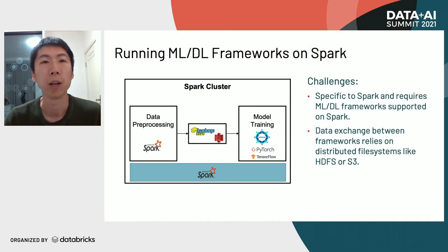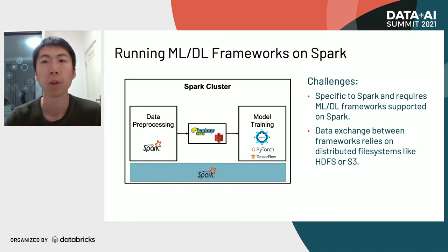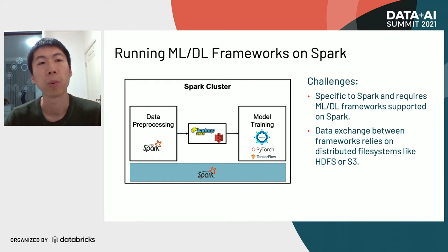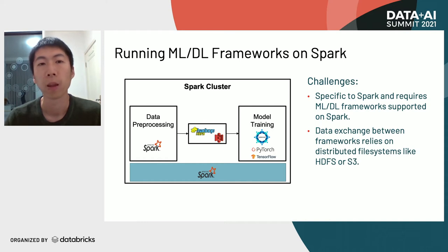The second approach is to run machine learning and deep learning frameworks on Spark. This is useful if you have an existing Spark cluster and want to leverage its resources for model training. However, there are challenges because this is very specific to Spark and requires the machine learning and deep learning frameworks to be supported on Spark. If a framework is not supported on Spark, or you do not have Spark in the pipeline, this will not work. Also, a distributed file system like HDFS is typically used to exchange data between Spark and the deep learning framework, which adds latency.